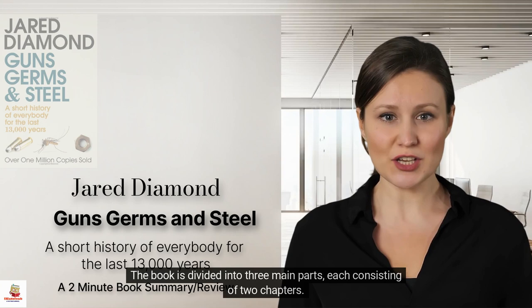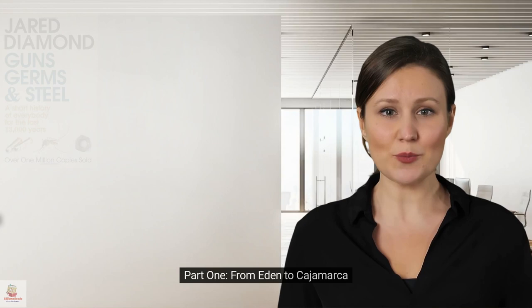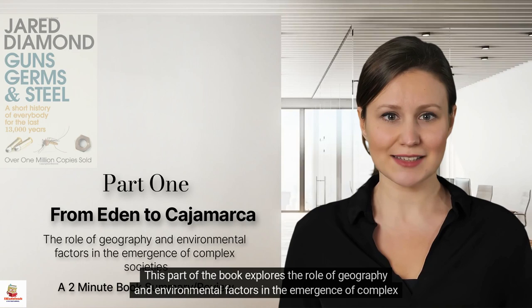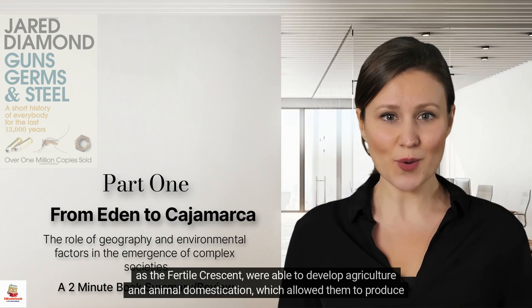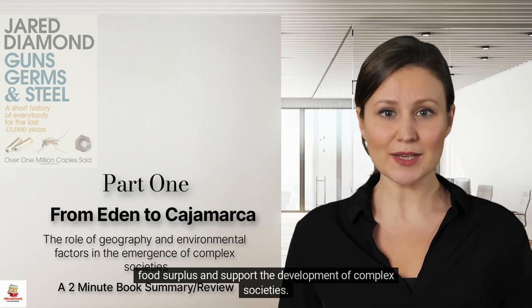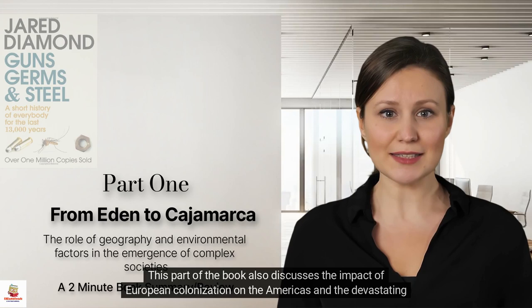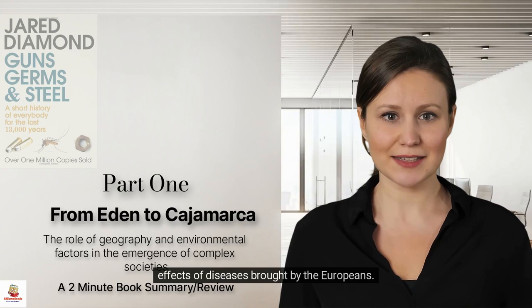Part 1: From Eden to Cajamarca. This part of the book explores the role of geography and environmental factors in the emergence of complex societies. Diamond argues that societies located in areas with favorable environmental conditions, such as the Fertile Crescent, were able to develop agriculture and animal domestication, which allowed them to produce food surplus and support the development of complex societies. This part also discusses the impact of European colonization on the Americas and the devastating effects of diseases brought by the Europeans.